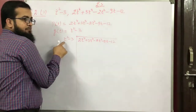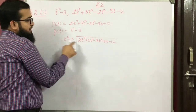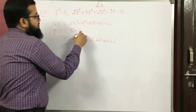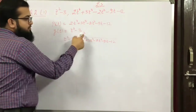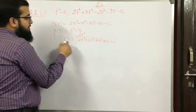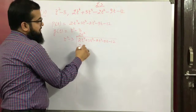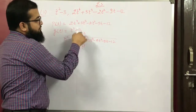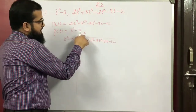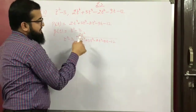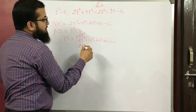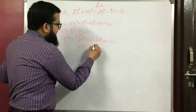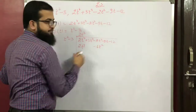To get 2t⁴, we multiply by 2t². So 2t² times t² is 2t⁴, and 2t² times minus 3 gives minus 6t². Write minus 6t² here.